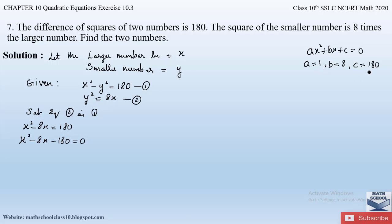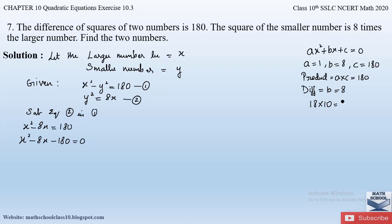Using the splitting the middle term method, we find the product: a × c = 1 × 180 = 180. Since the sign of the constant is minus, we take the difference (not the sum), and the difference must equal b = 8. So we need two factors of 180 whose product is 180 and whose difference is 8. Notice that 18 × 10 = 180 and 18 − 10 = 8.